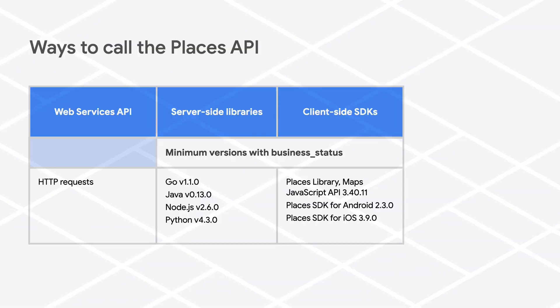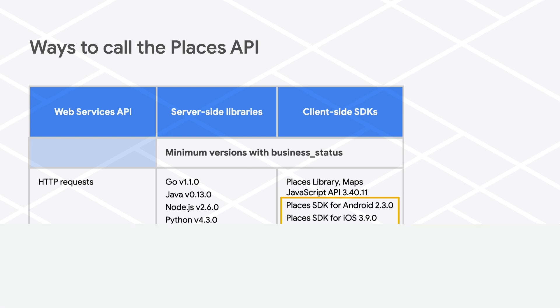You can use the Business Status field immediately with HTTP calls to the Places API or through our various client libraries, including the client-side Places library in the Maps JavaScript API and the server-side libraries for Go, Java, Node.js, and Python. This field will also be included in the next releases of the Places SDK for Android and the Places SDK for iOS.